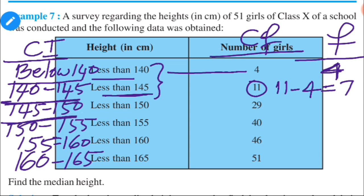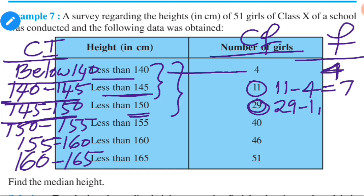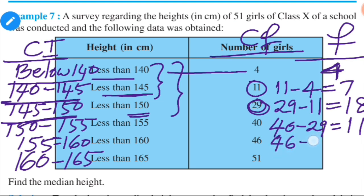For class 145 to 150: 29 is the cumulative frequency of less than 150, which covers three classes together. So frequency of 145 to 150 is 29 minus 11, equal to 18. Similarly, frequency of 150 to 155 is 40 minus 29, equal to 11. Next, 46 minus 40 equals 6, and the last frequency is 51 minus 46, equal to 5.